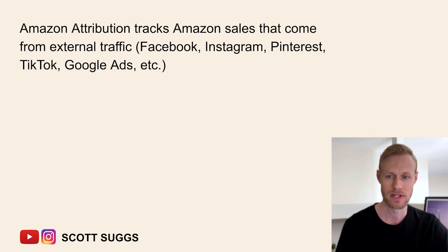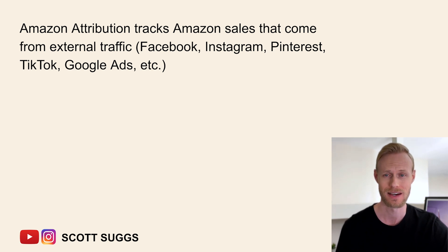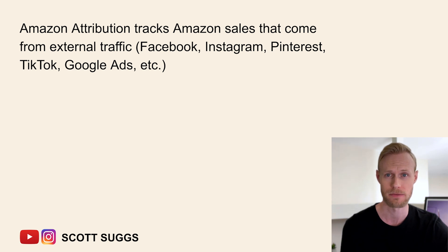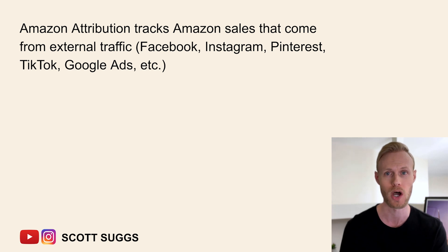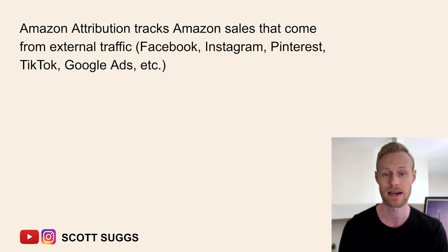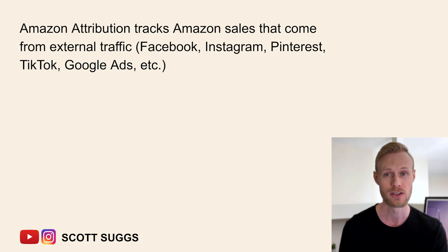So first, what is Amazon Attribution? Amazon Attribution is a tool developed by Amazon that tracks sales that come from external traffic — places like Facebook ads, Instagram, Pinterest, TikTok, Google ads, or any other platform out there. And it doesn't have to be paid advertising; it could be free organic traffic as well. For example, you can track how many sales come from an email you send to a list, a blog directing to your Amazon listing, or an influencer you're working with. You can use Amazon Attribution for all of that.